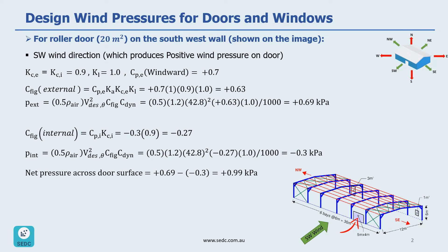For the roller door that has 20 square meter area and is located on the southwest wall, we might have two different situations for the wind loading. The first one is a positive wind load applied on the surface, related to the southwest wind direction, and the second one is a negative case for wind load, when we have wind in southeast or northwest directions.